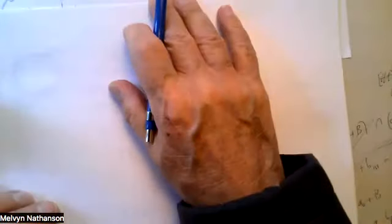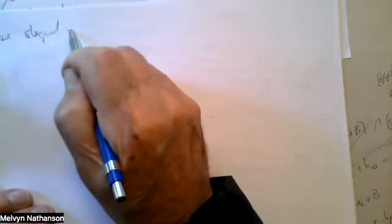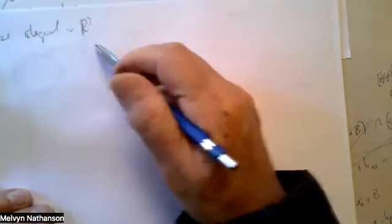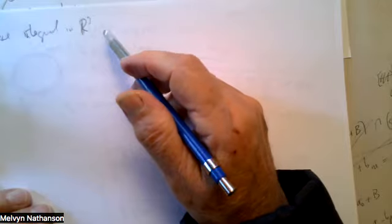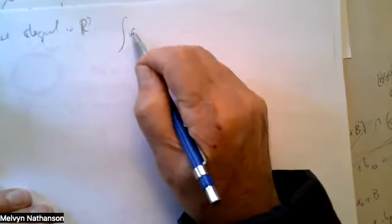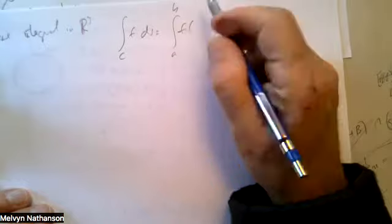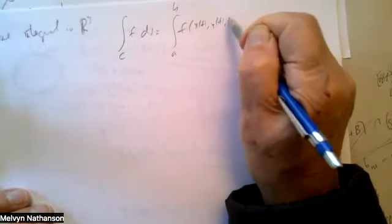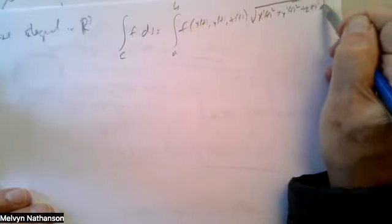A line integral in R3 is defined similarly: the integral along a curve in R3 from A to B is the integral of F(X(T), Y(T), Z(T)) times √(X'(T)² + Y'(T)² + Z'(T)²) dT.